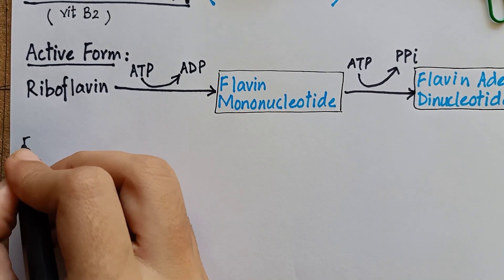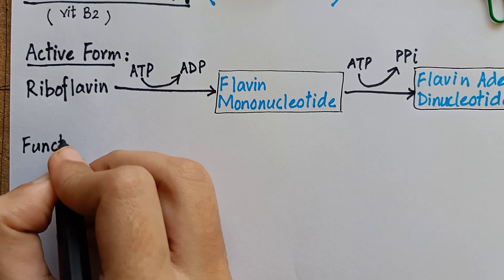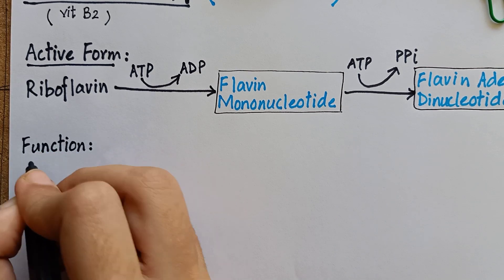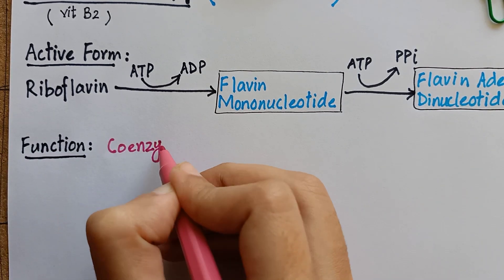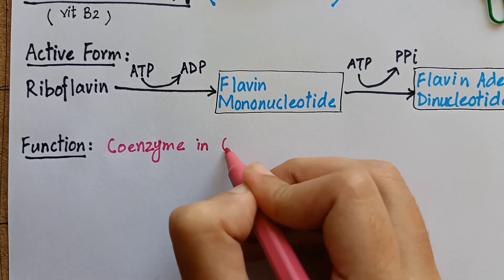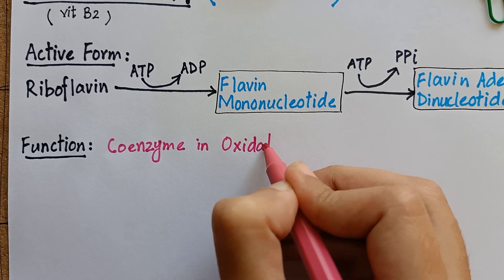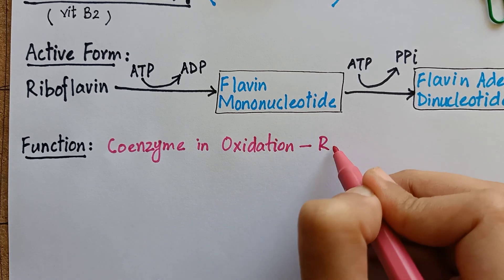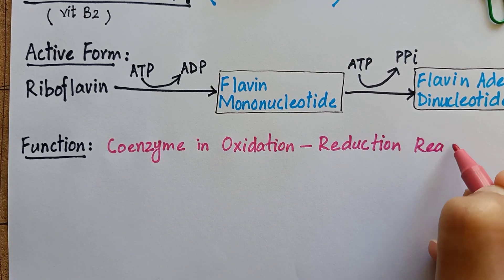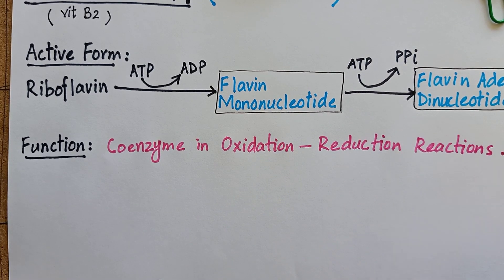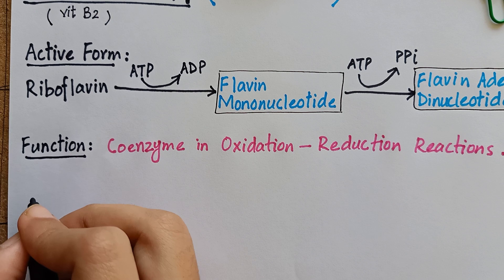These two flavin coenzymes catalyze oxidation and reduction of substances in many energy-releasing reactions of carbohydrate, lipid, and protein metabolism.